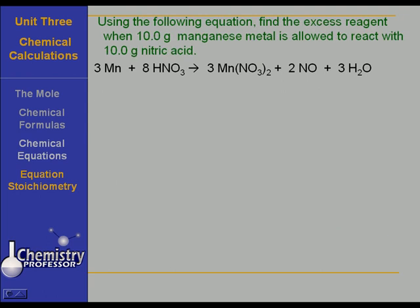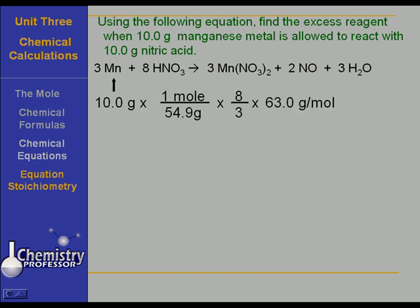Here's another interesting problem that sometimes gives students trouble. We want you to use this equation, the same one we've been using. But we want you to find the excess reagent if 10 grams manganese metal is allowed to react with 10 grams of nitric acid. Now, in this problem, you don't have another compound to direct your query to. For example, you aren't taking each one of those reagents and looking for a third one. You're looking for those two with respect to each other. And here's a way to do it. Start with 10 grams. Let's start with 10 grams of manganese. We take our 10 grams of manganese times one mole over 54.9 grams. Now, we're going to find out how much nitric acid is required to react with that. It's times an 8 to 3 mole ratio times 63 grams per mole.